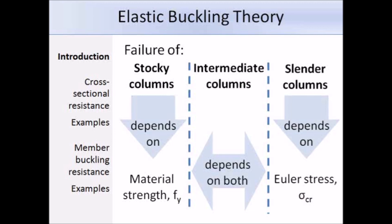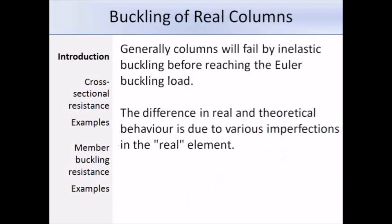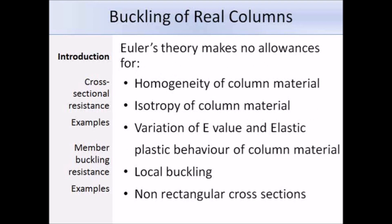The material covered so far has assumed perfect columns, but in reality most columns will fail at loads below the Euler load. The difference between real and theoretical behaviour is mainly due to imperfections in the real element. Examples of imperfections include initial out-of-straightness, residual stresses, eccentricity of applied loads, and strain hardening. All of these affect the buckling behaviour of the column. Furthermore, Euler's theory makes no allowance for the homogeneity or isotropy of the column material, does not allow for variation in Young's modulus, does not consider local buckling, and can only be used for certain sections. This is a problem since most real columns touch upon one or more of these categories.